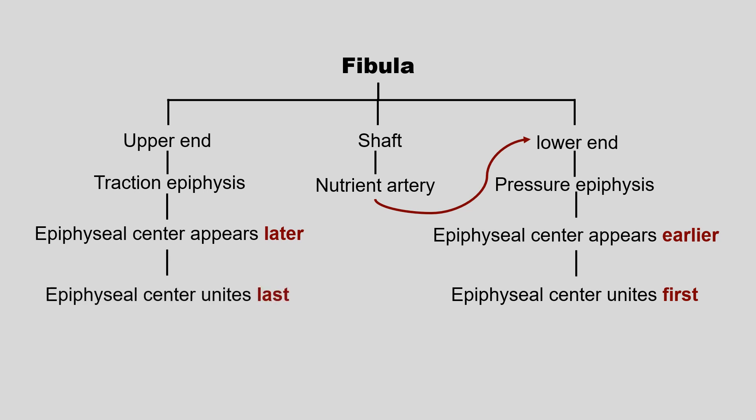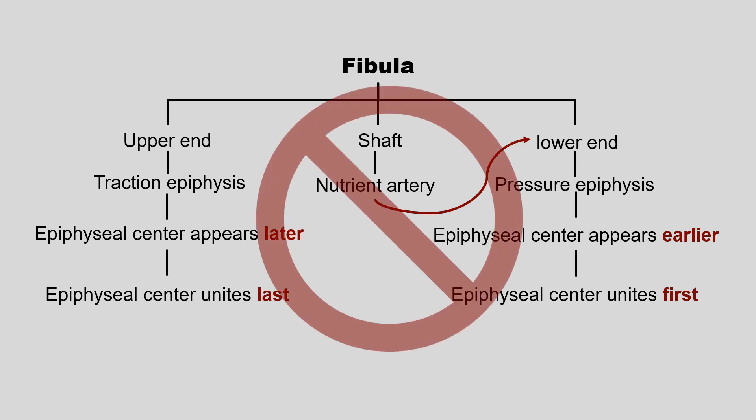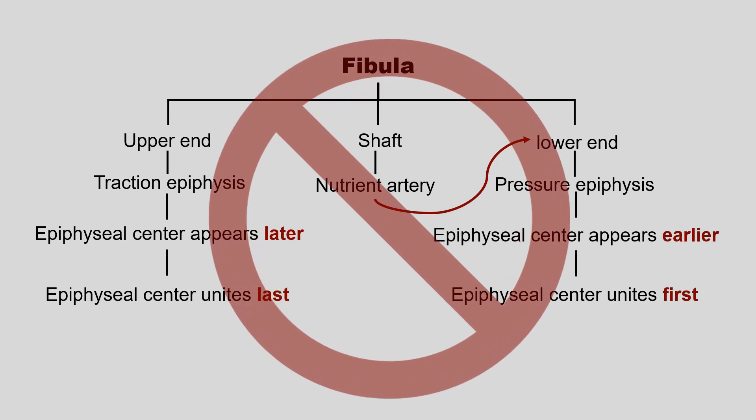In the case of the upper end, the epiphyseal center appears later and also unites with the diaphysis last — which is the violation of the law of union of epiphysis. This is the end of the video. Hope you will understand. Thank you all.